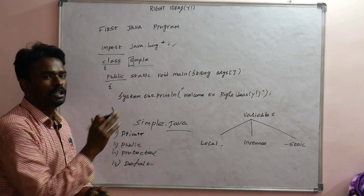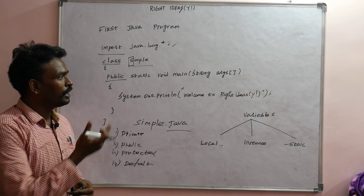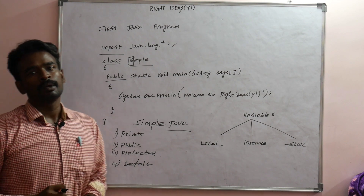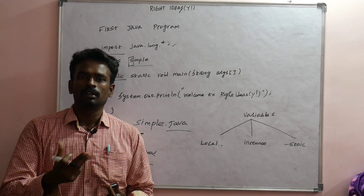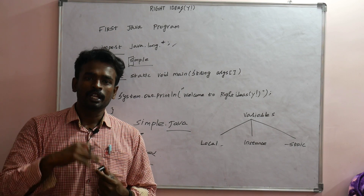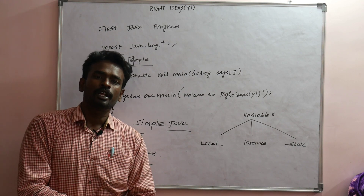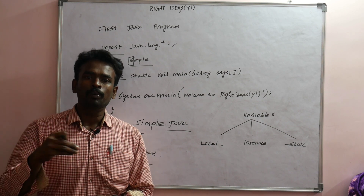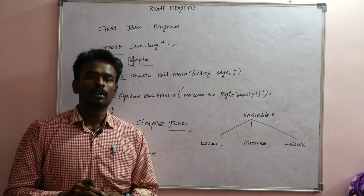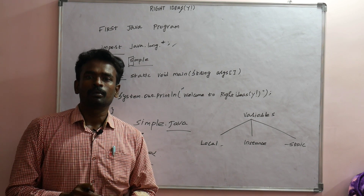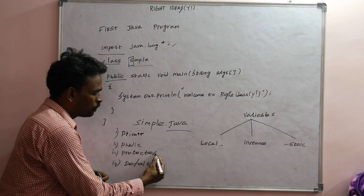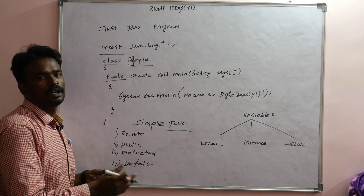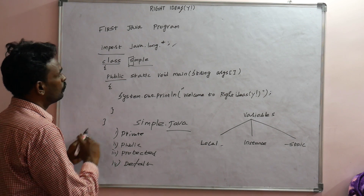If you use public, it is open to all — like a public main function that runs automatically. The main function is public so the JVM can invoke it automatically. Narrow, restricted data is private. Wide, open data is public. Then there is protected, and finally default access specifier.